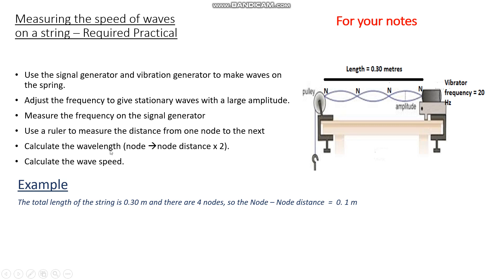Now as it says here, to calculate the wavelength of the wave, all you need to do is multiply the node to node distance by 2. So the wavelength is double the node to node distance. So it's 2 times 0.1, and that will always be the case. The wavelength is always double this distance there, the node to node distance. So in this case, 0.2 meters.